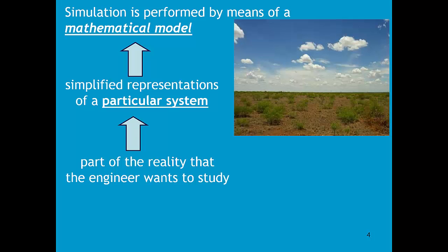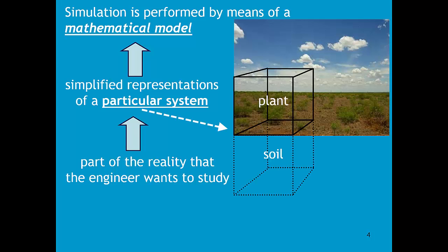In AquaCrop we are interested in the field in which plants are cultivated. Plant production depends strongly on the conditions in the soil, so there will be an interaction between the plant and the soil. If there is a lot of water, plants will grow well. If the soil is poorly fertilized and dry, the plants will not develop. So we are going to look at the interaction between the plant and the soil.